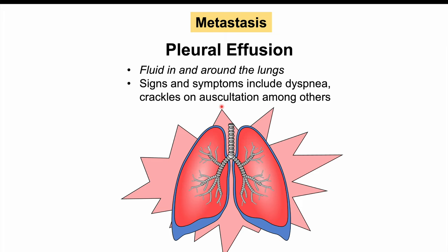We can also see paraneoplastic syndromes occurring in gastric cancer, leading to particular skin findings like Leser-Trélat sign and malignant acanthosis nigricans. For more information on paraneoplastic syndromes of gastric cancer, please check the dedicated lesson on that topic.